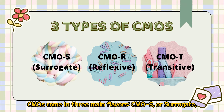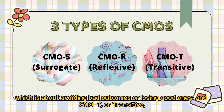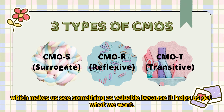CMOs come in three main types: CMO-S, or surrogate, which gets its motivating power from being paired with another motivator; CMO-R, or reflexive, which is about avoiding bad outcomes or losing good ones; and CMO-T, or transitive, which makes us see something as valuable because it helps us get what we want.